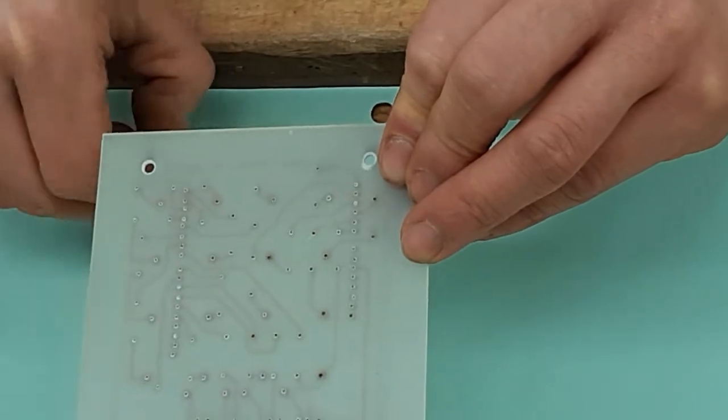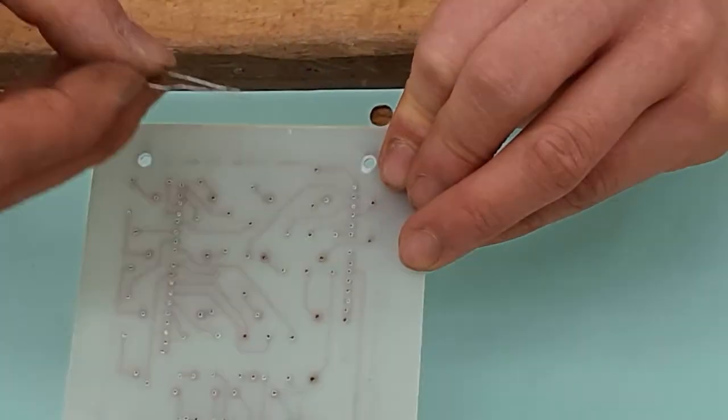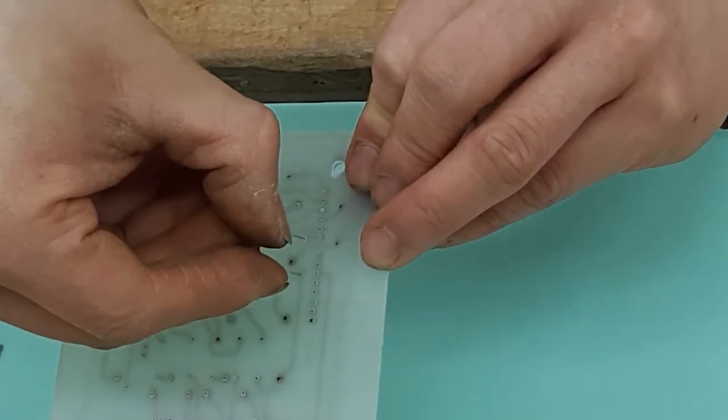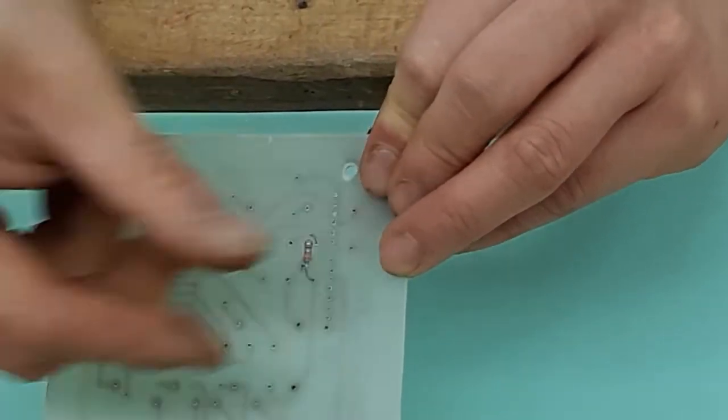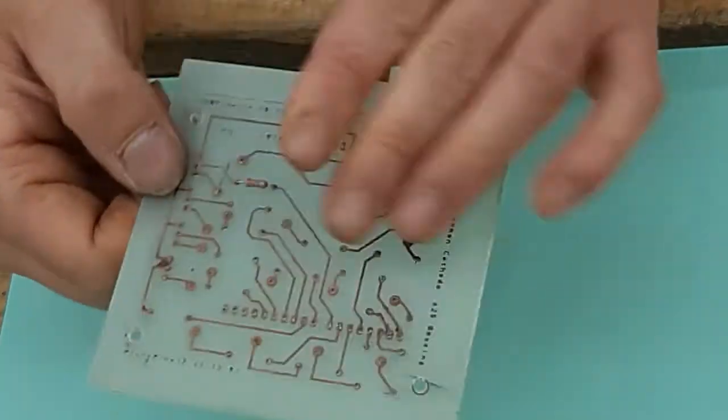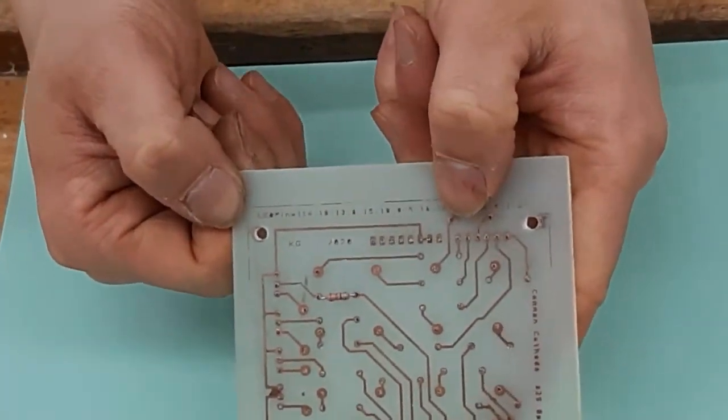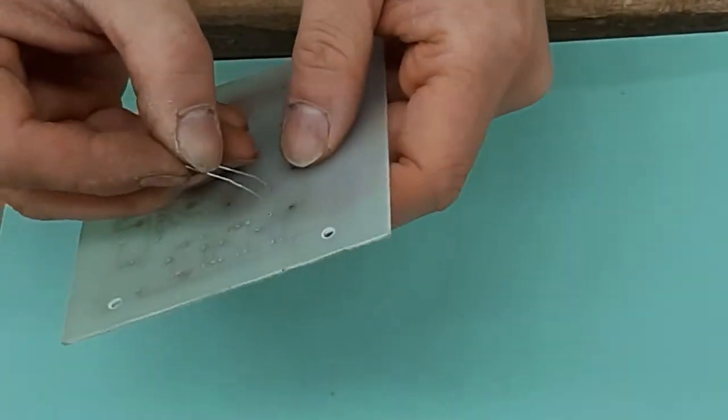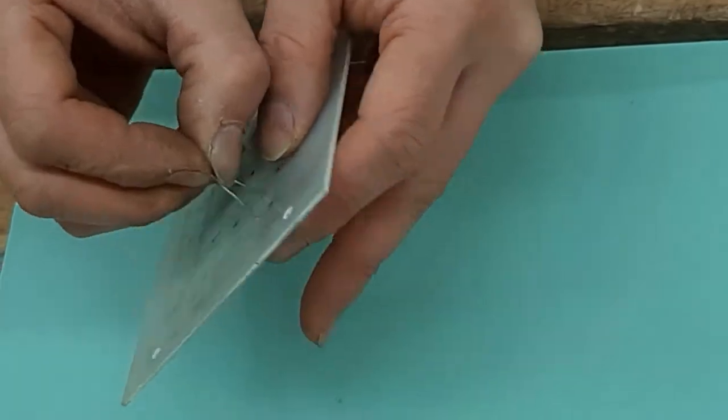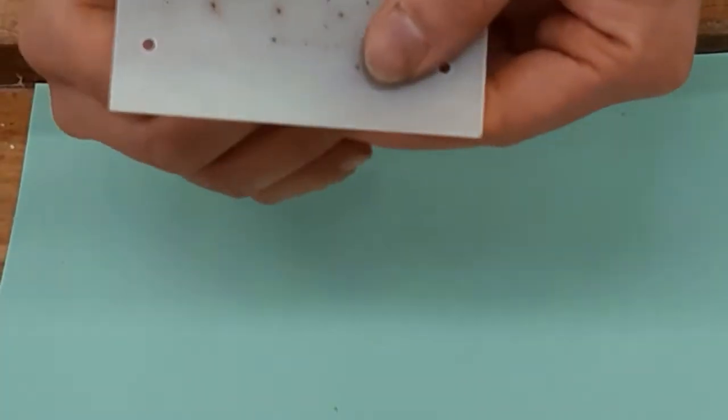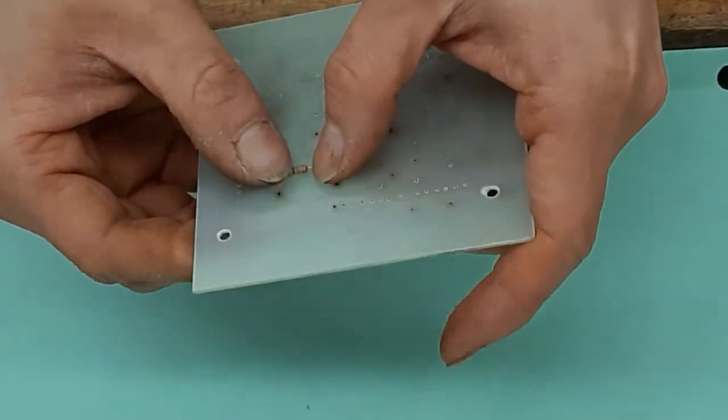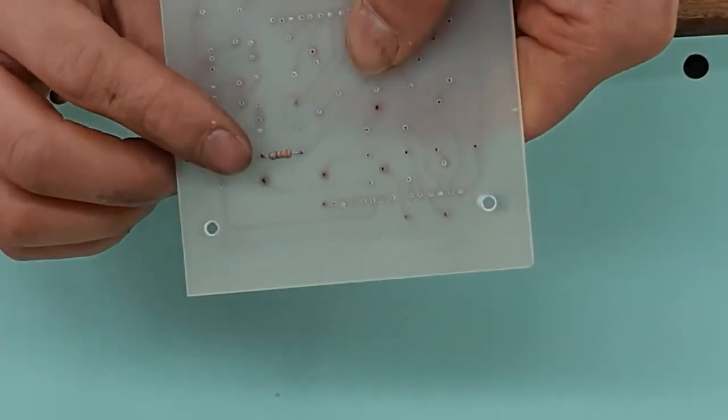And so when you're sticking electronic components in, you want to stick them going into the non-copper side like this. If you're putting them in this way, you're soldering it wrong. Another good tip when you're putting things into the circuit board is that you want the electronic component to lie flat like this.